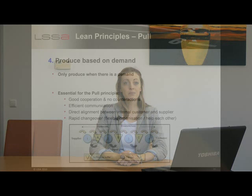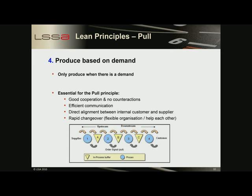To prevent inventory waste, the leading production principle should be pull. This means that we should produce only when there is a demand from our customer, and not produce more than the customer needs at a given time. To be able to do this, there are essential conditions such as good cooperation, communication, and alignment of the supply chain, as well as rapid changeovers between products and a flexible workforce. In this picture, we can see the flow of pull information going upstream, causing a downstream flow of products being produced only when needed. Only small buffers are allowed between processes.